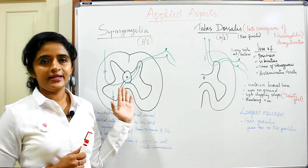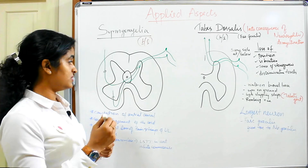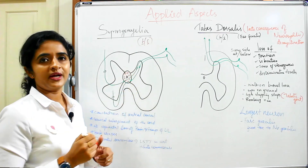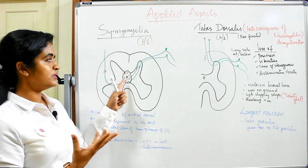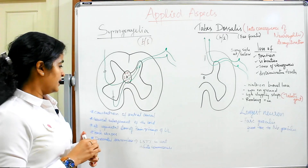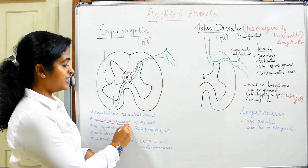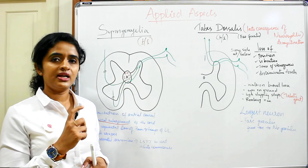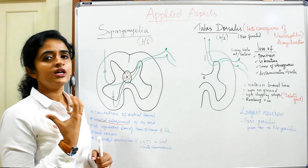Coming to syringomyelia, this condition is manifested as cavitation or a cavitatory lesion around the central canal of the spinal cord. The central canal will cavitate and become larger, eroding the nerve fibers which are crossing in front of the central canal. The site usually affected in the spinal cord is the cervical enlargement, which is more prone to syringomyelia.